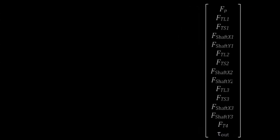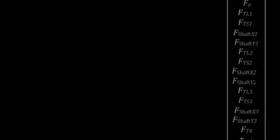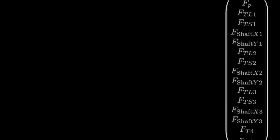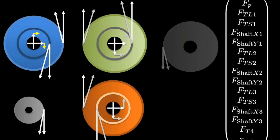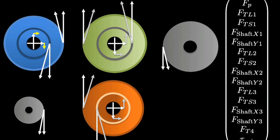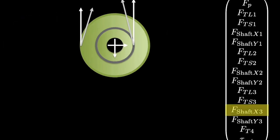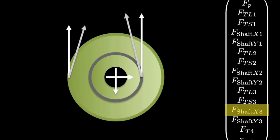By solving this system, we find unique values for all the unknowns. When we assemble the equations, we guess the direction of each force in the free body diagram. So it's useful to inspect the solution for negative values. For the parameter values we chose, the reaction force at the shaft of the third body in the x-direction turns out to be negative. We should ask ourselves, did we guess wrong about the direction of the force, or is there something wrong with our matrix?